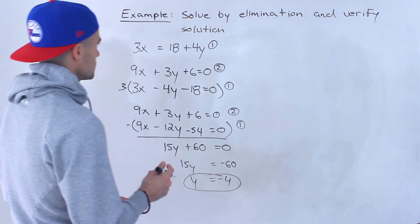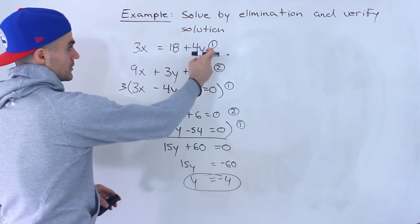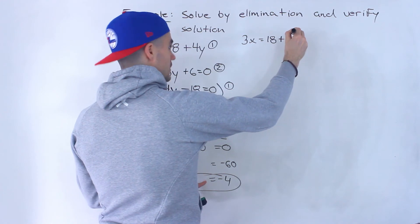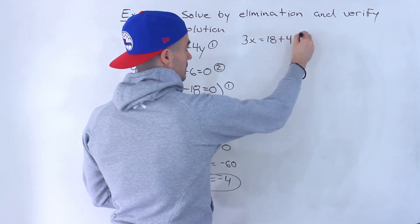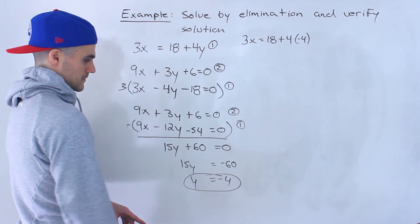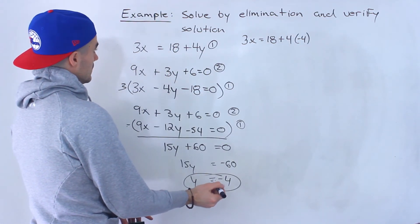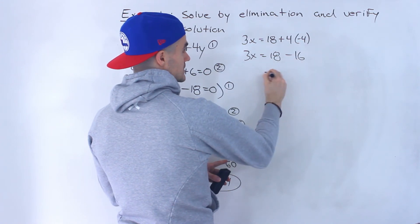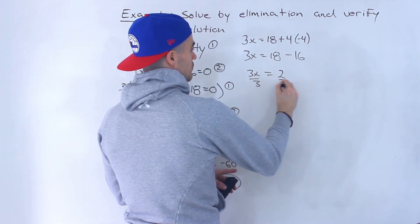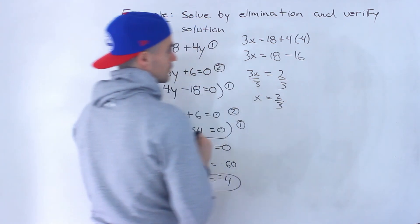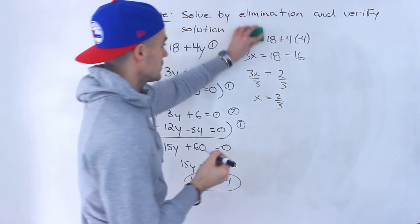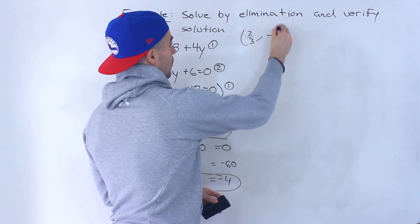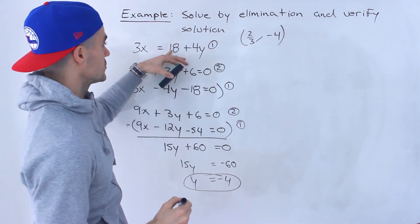Now to solve for x, we can just take this y value and plug it into any of the lines. I'm going to plug it into this first line. So we'll have 3x equals 18 plus 4 times negative 4. So 3x equals 18, and 4 times negative 4 is negative 16. 18 minus 16 is 2. Divide both sides by 3, x is 2 over 3. So the final solution is 2 over 3 for x and negative 4 for y. That is the point at which both of these lines intersect.